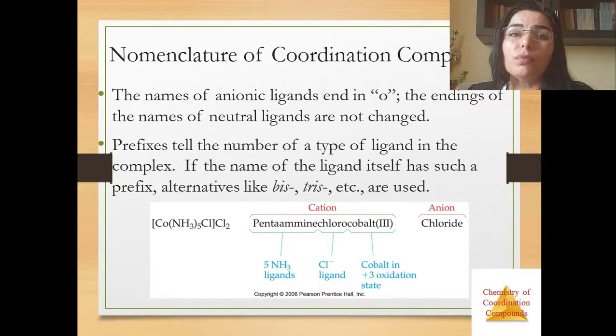The prefix tells the number of a type of ligand in the complex. If the name of the ligand itself has such a prefix, alternatives like bis, tris, etc. are used.